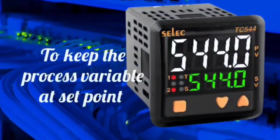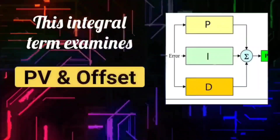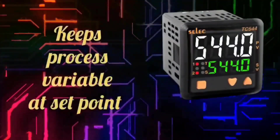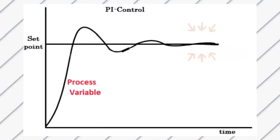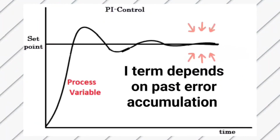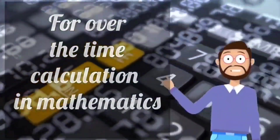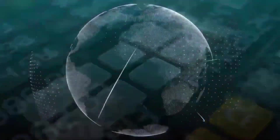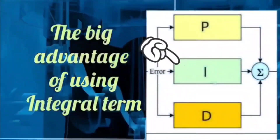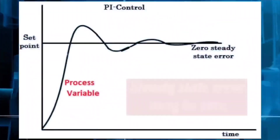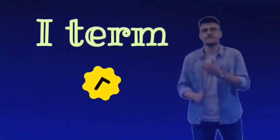To keep the process variable at set point, I term is used. This integral term examines the process variable and the offset over the time. By correcting the output, the value of the process variable is brought to the set point. The integral term depends on the accumulation of past errors. Because in mathematics, integration is used for over-the-time calculation, therefore this term is called integral or integration term. Using the integral term, the steady state error becomes zero. I term is clear.